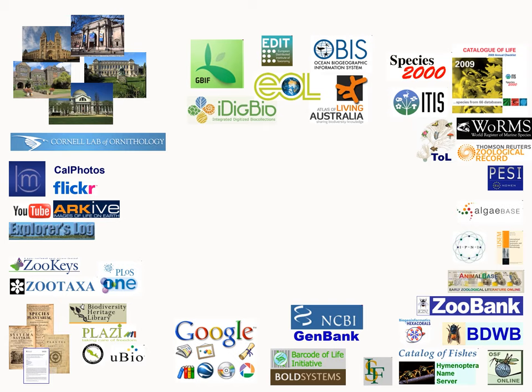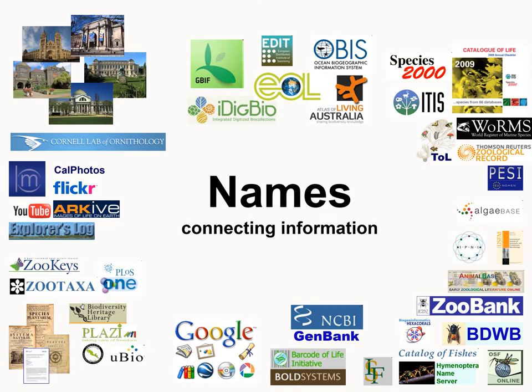The one thing that currently and historically links all of this information together is names — particularly scientific names. That's the most structured way of linking information from one disparate data set to another. It's one of the greatest standards we have in biology, in fact in all of science: a 250-year-old standard established by Carl Linnaeus for both plants and animals, and later adopted by bacteriology, for assigning scientific names to organisms.